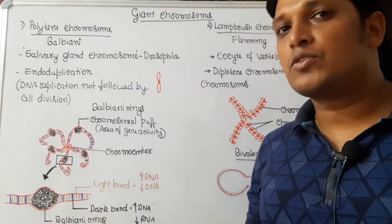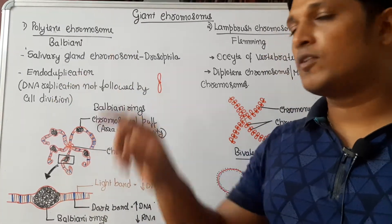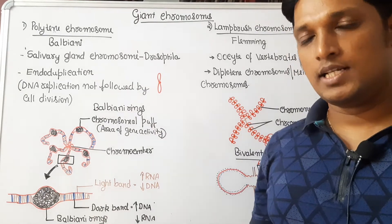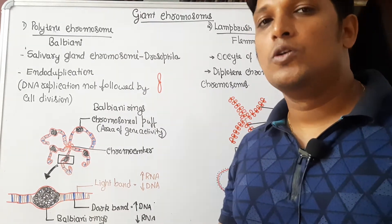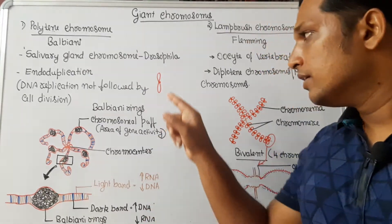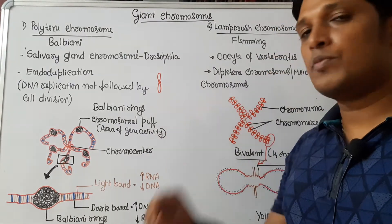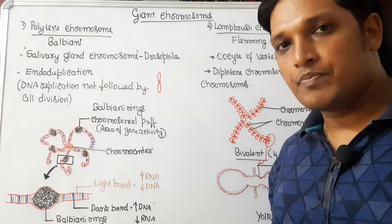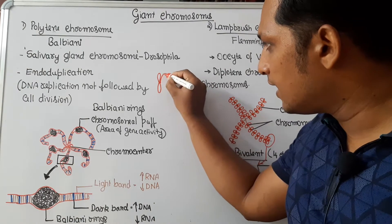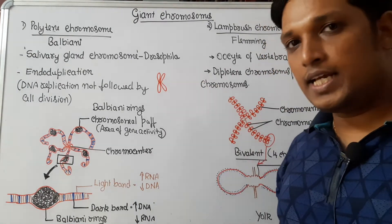How is this giant chromosome formed? It is formed by a process known as endoduplication. In the beginning, this is how a chromosome looks. During S phase of the cell cycle, there will be replication of DNA.